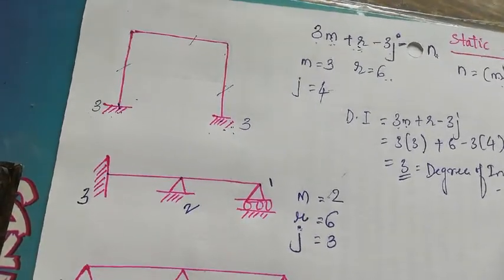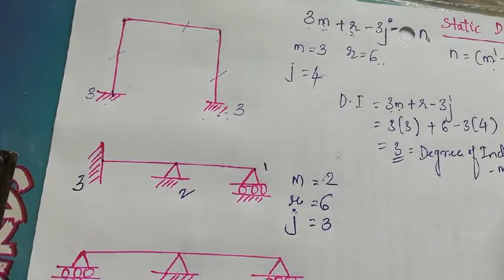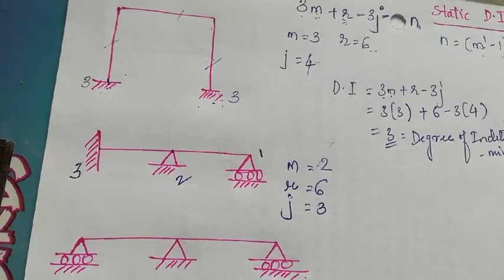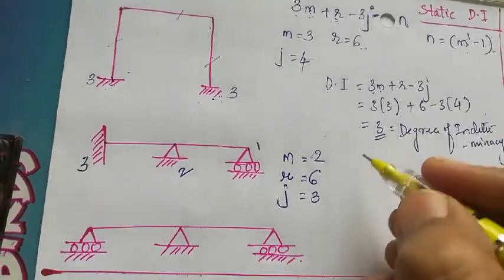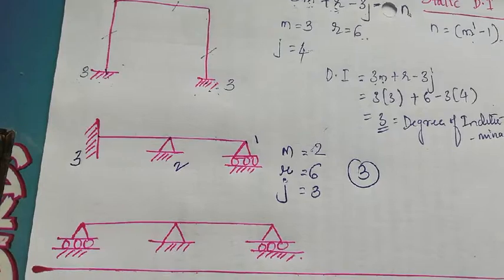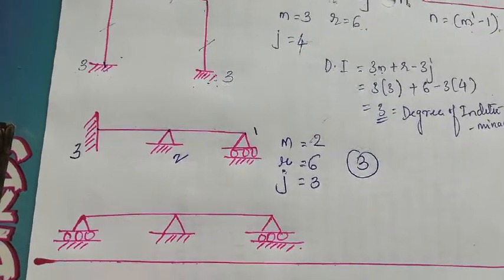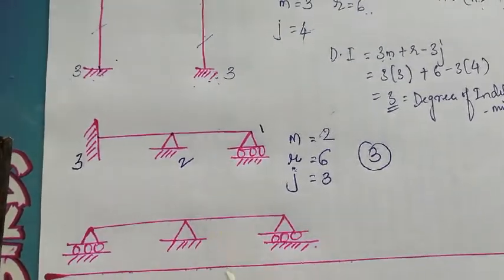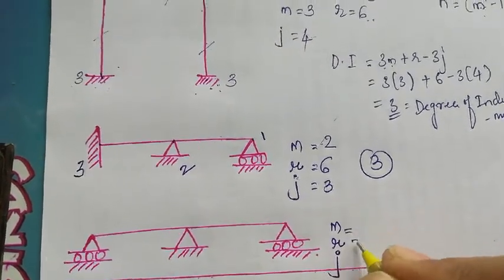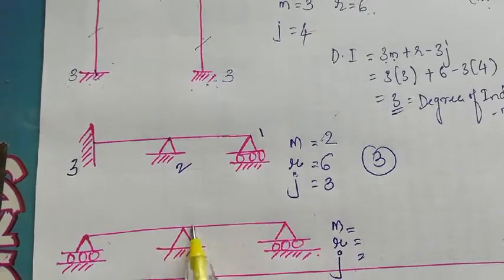Substituting into 3m + r - 3j, the answer is 3. The degree of indeterminacy = 3. Moving to the next problem: how many members? 1 and 2, so m = 2.